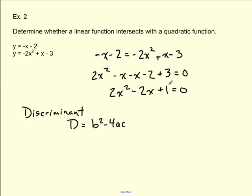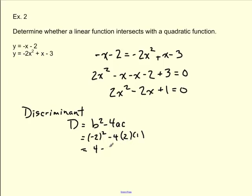In our equation 2x squared minus 2x plus 1, let's evaluate b squared minus 4ac. Our b value is negative 2, so this is negative 2 all squared, minus 4 times a (which is 2), times c (which is 1). Negative 2 squared is 4, and 4 times 2 times 1 is 8. So we have 4 minus 8.